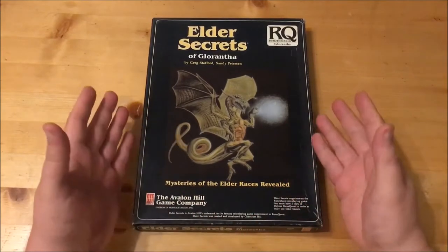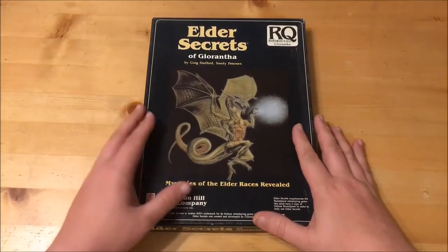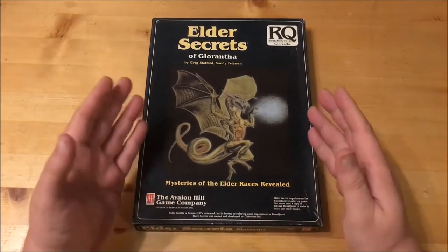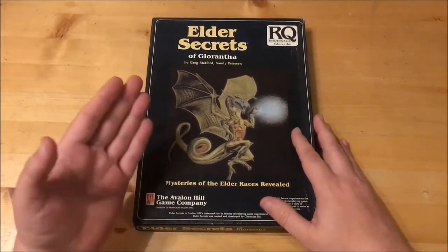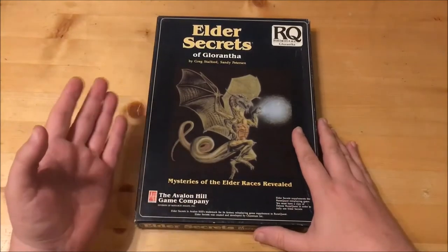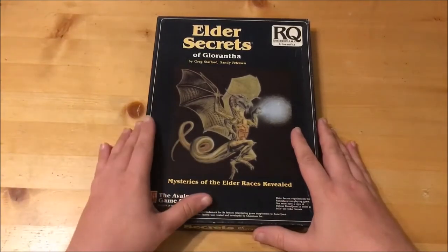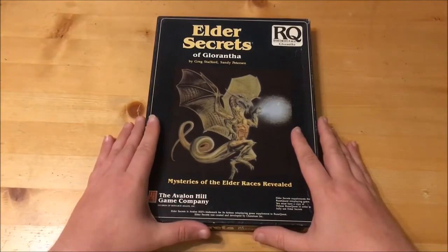Elder Secrets of Glorantha is a box set of books that provide information on previously unknown or little known secrets of Glorantha's Third Age, mostly to do with the Elder races: the Mostali, the Aldreiai Army and the Uz, as well as the lesser races of Glorantha. Also included is information on the strange things and places of the world. Additionally, it was the final book produced for the third edition of the game.